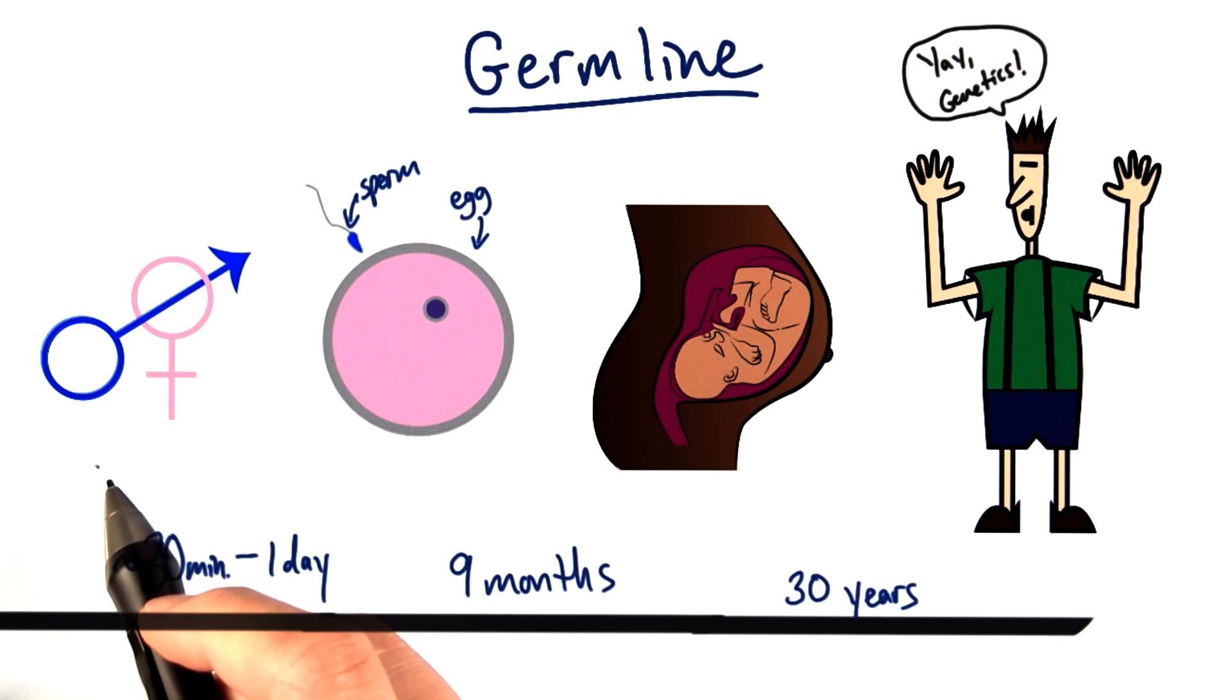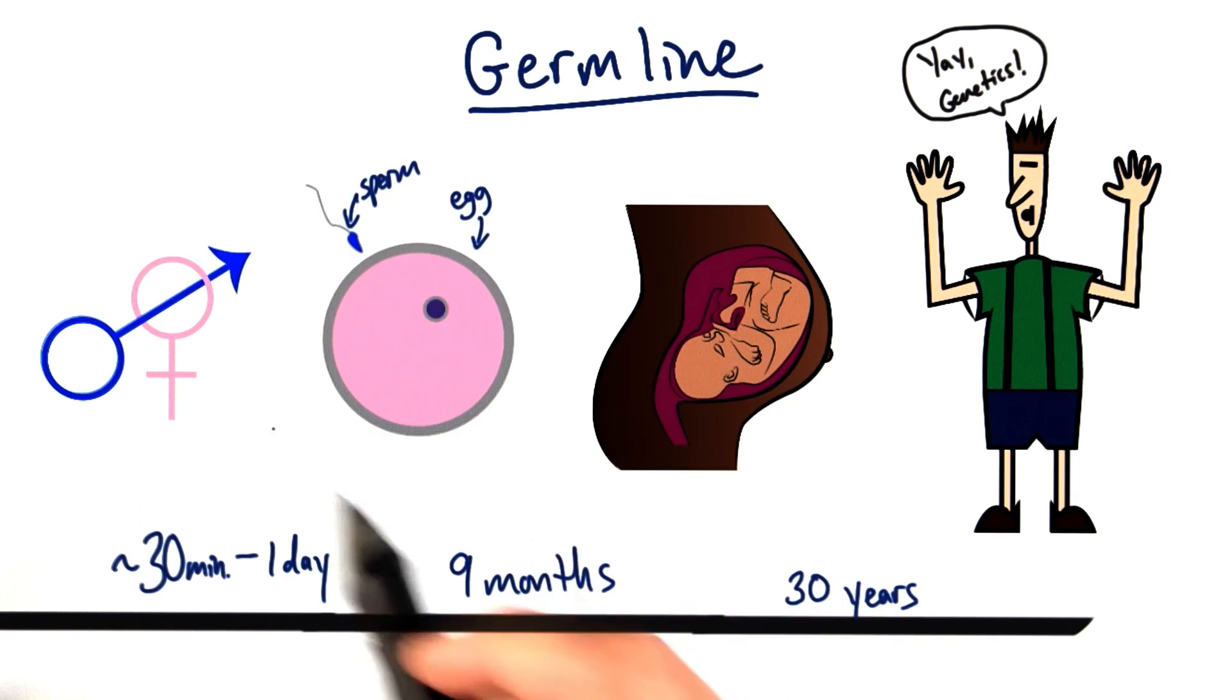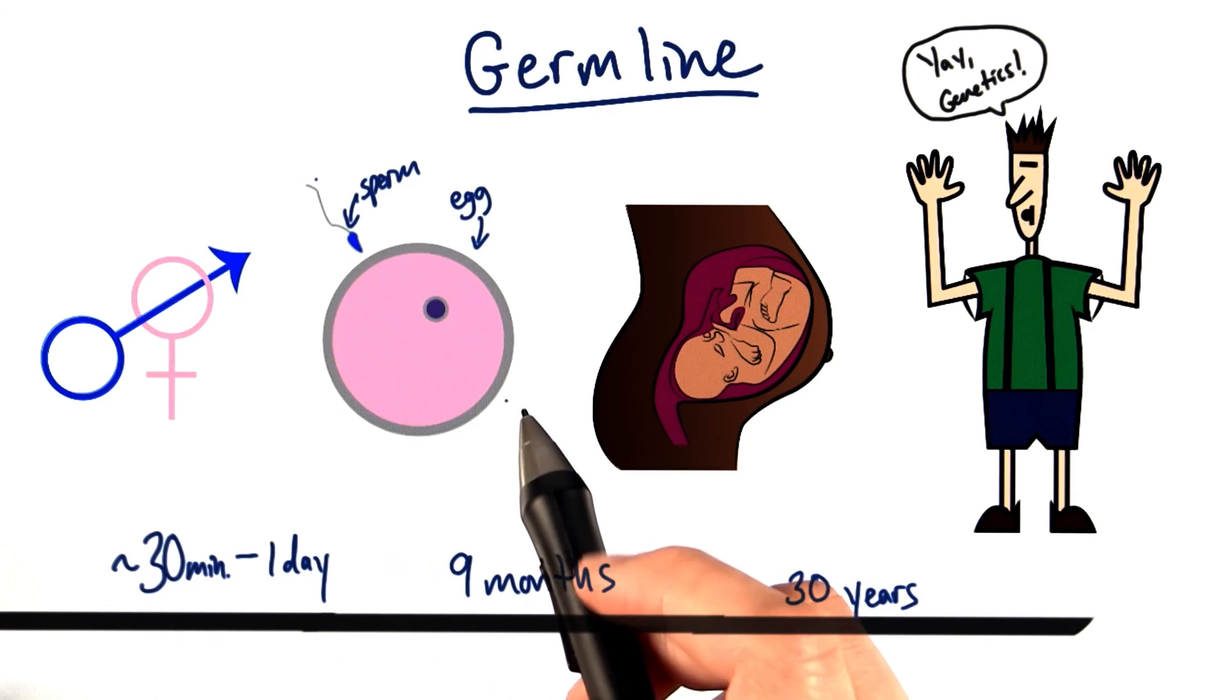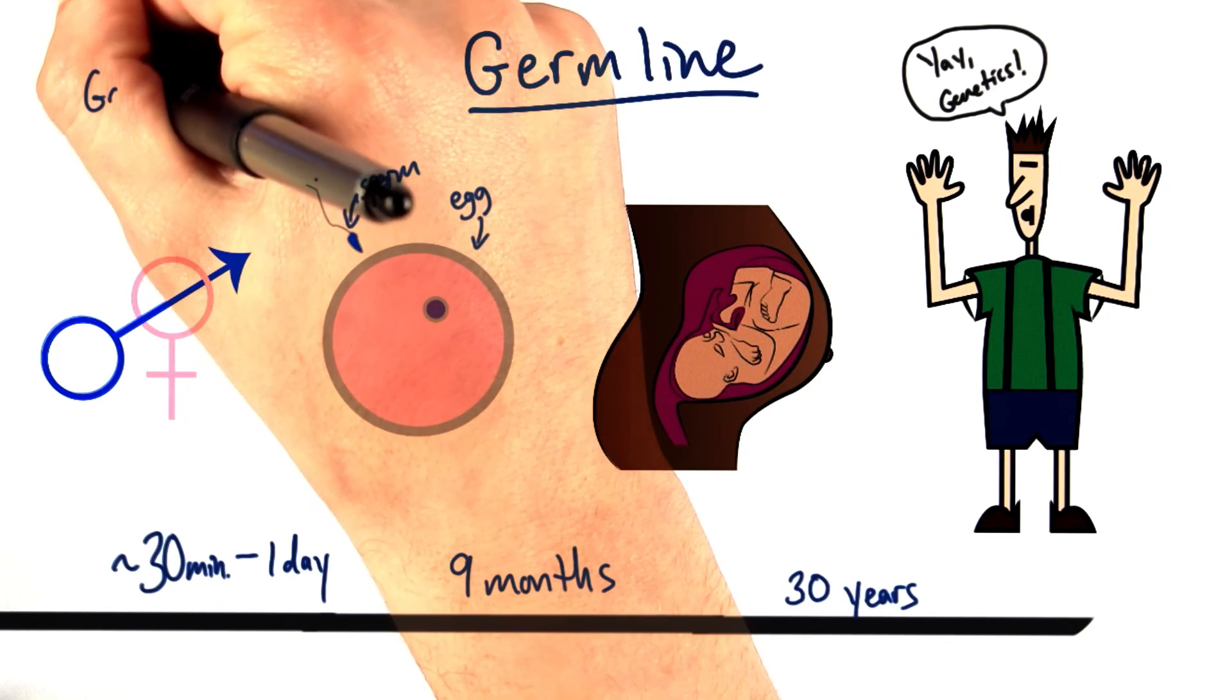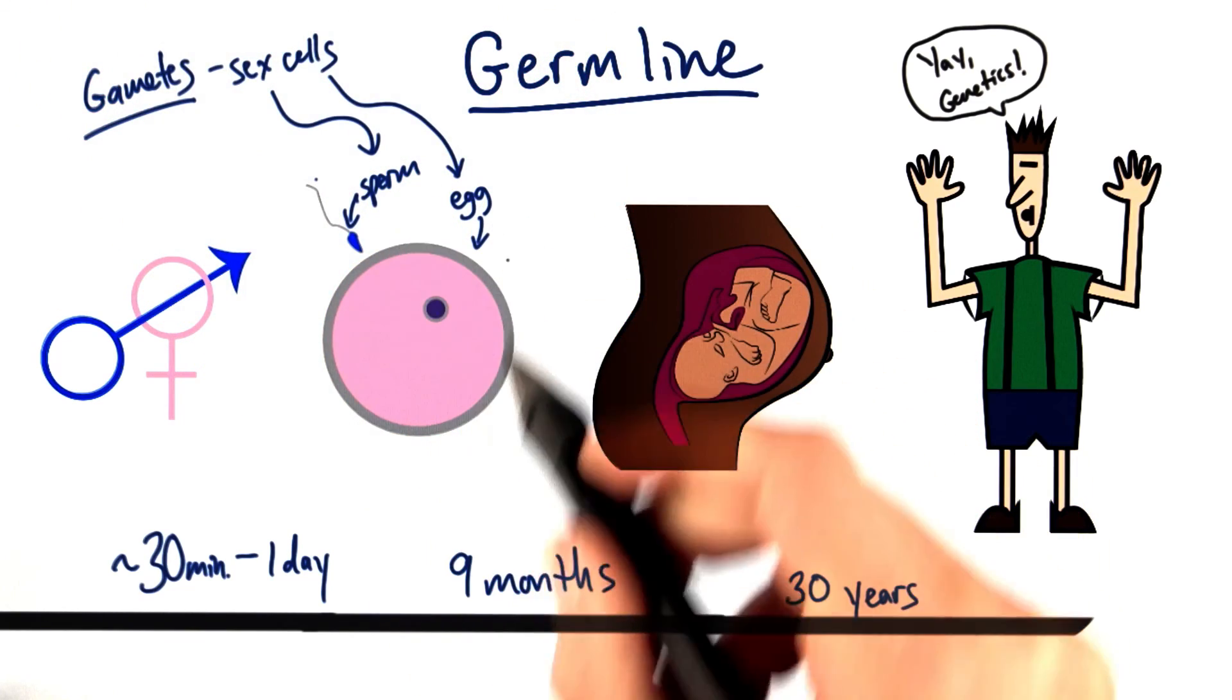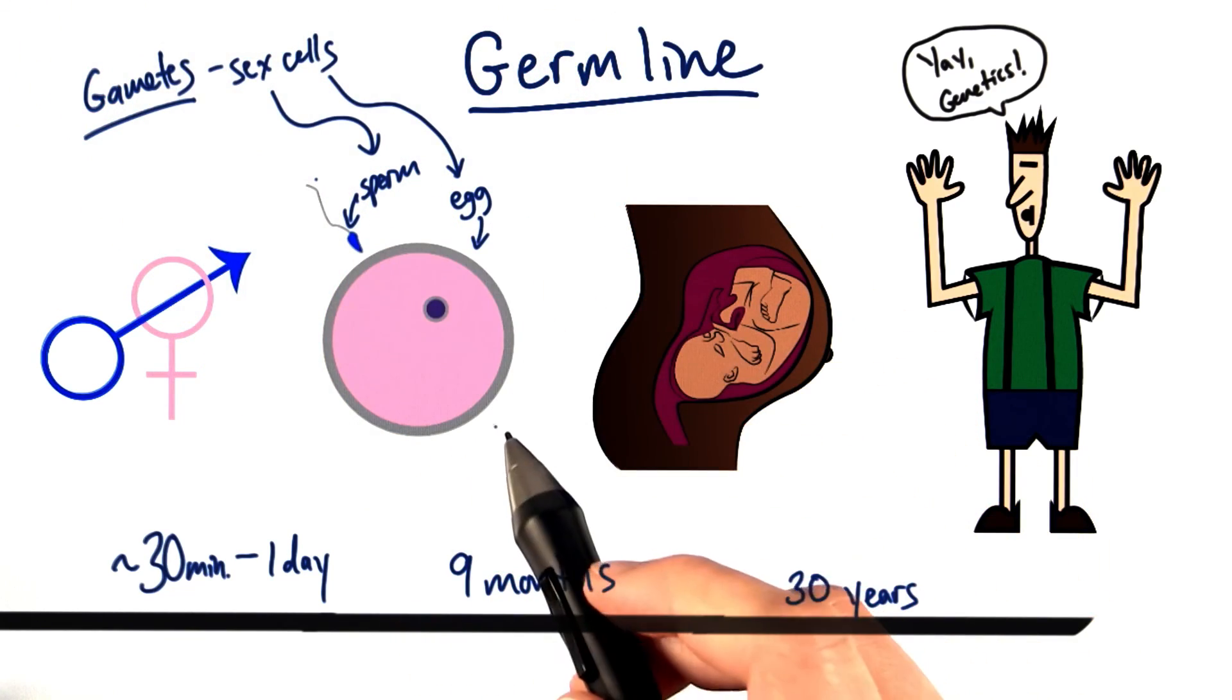While I owe a lot to my mom and dad for bringing me into this world, I really owe their sex cells, or what we call gametes. Gametes are either sperm or eggs. Sperm in males, eggs in females.